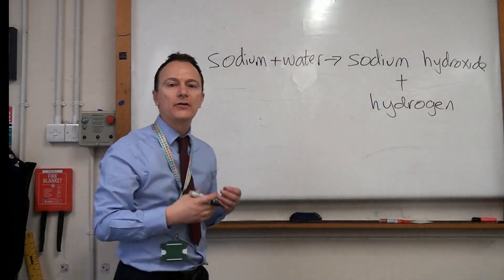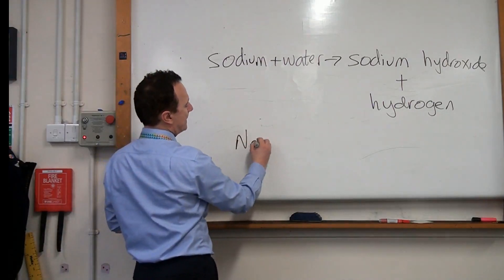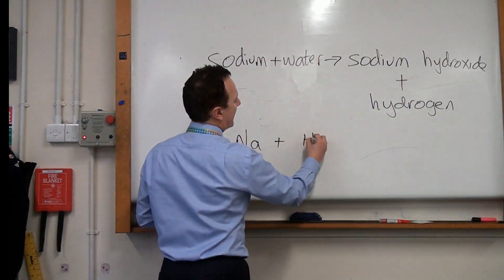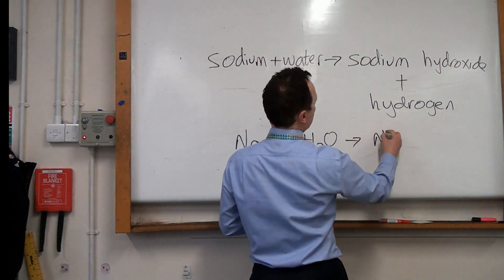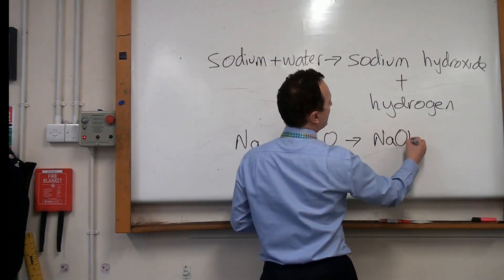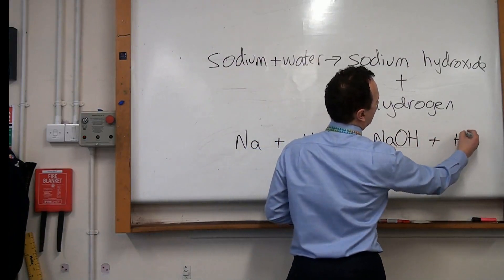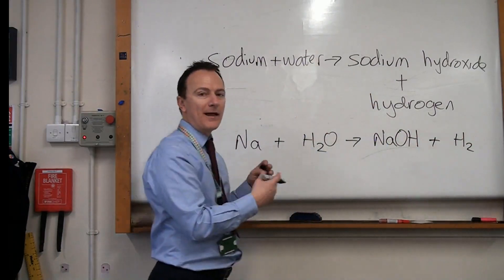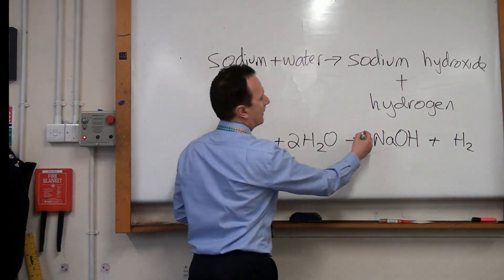Higher tier, you also need to be able to write the symbol equations for this. So sodium is Na, we all know that water is H2O, and it makes sodium hydroxide, NaOH, which is the alkali plus hydrogen. And then we would need to balance each side, which would take a 2 and a 2 and a 2.